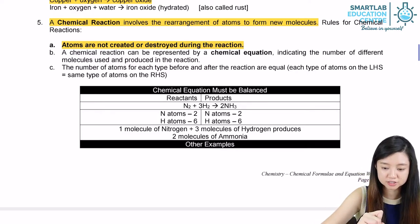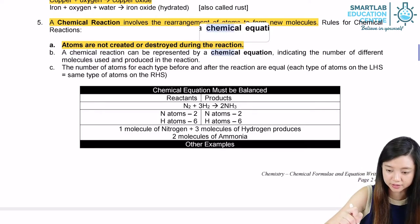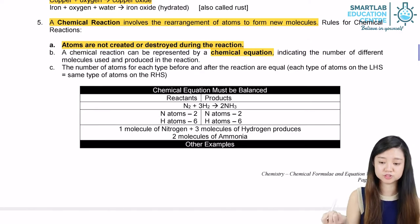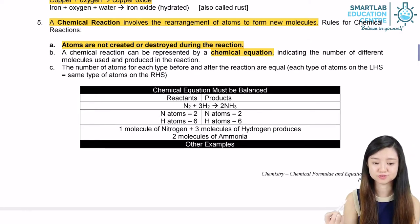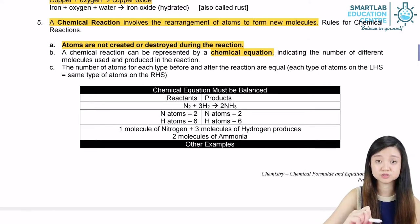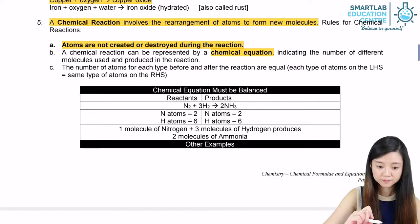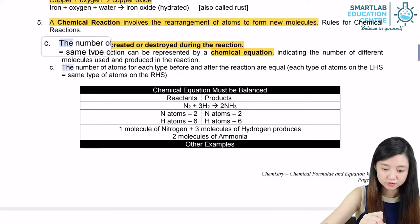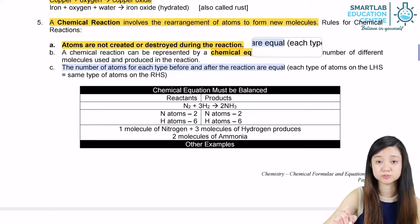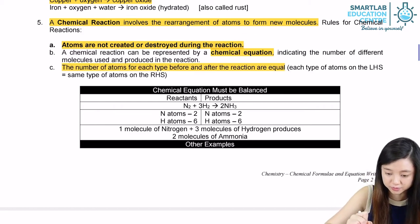A chemical reaction can also be represented by a chemical equation, which will indicate the number of different molecules used and produced in the reaction. The number of atoms of each type before and after the reaction have to be equal. Let's look at an example.